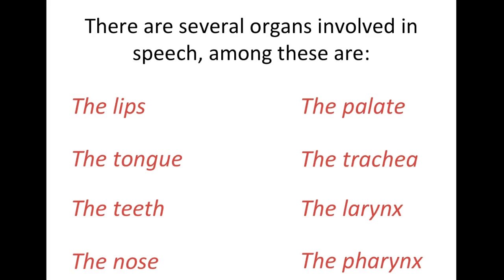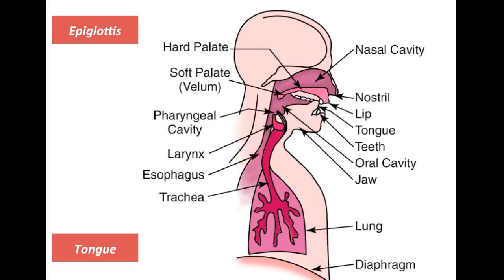Let me introduce you to Oscar. Oscar is the name we usually use to refer to this anatomical model over here, which shows us the different organs that are involved in speech and their specific location. So how do human beings produce sound — how do they produce voice and speech?